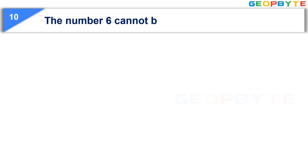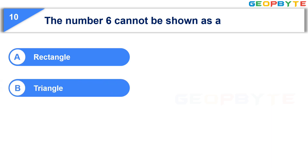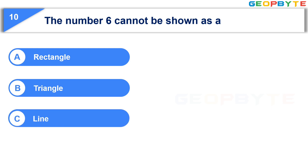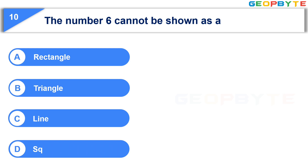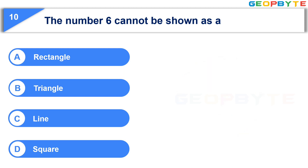The 10th question is: The number 6 cannot be shown as a. Option A: Rectangle. Option B: Triangle. Option C: Line. Option D: Square. Your time starts now. The correct answer is Option D: Square.